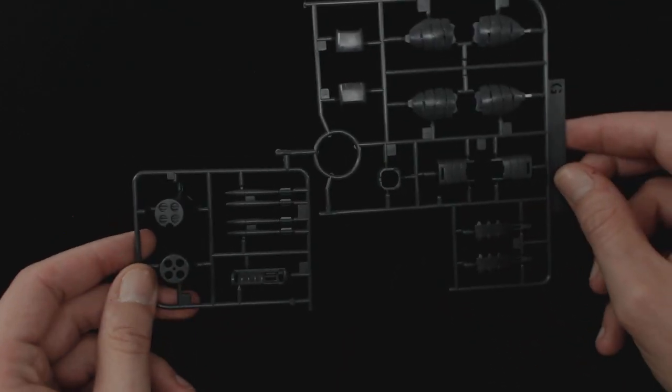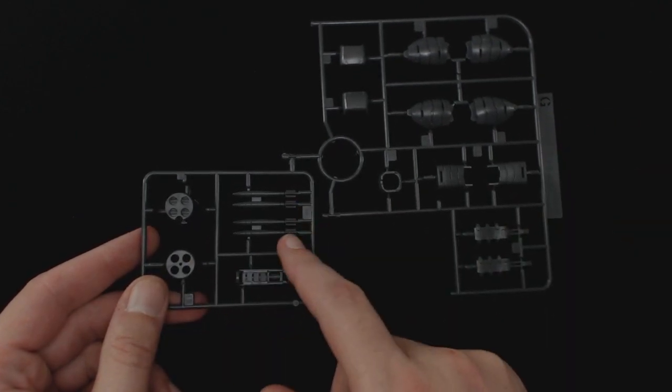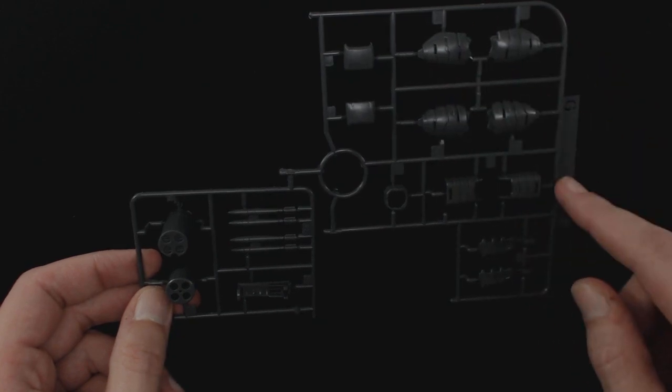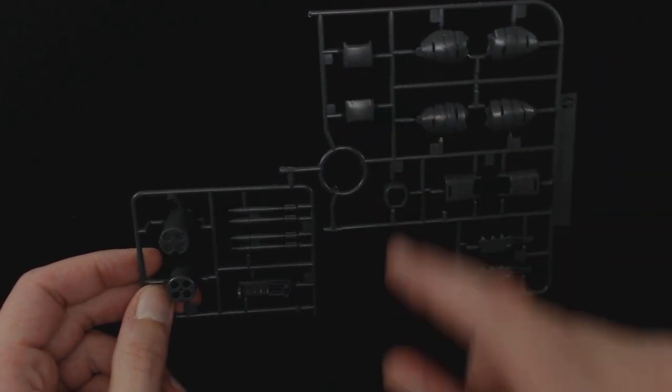For runner G, you've got part of the Gatling gun or missile section over here. You've got leg pieces, back of the hands.